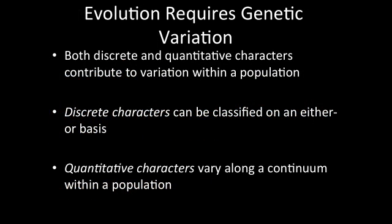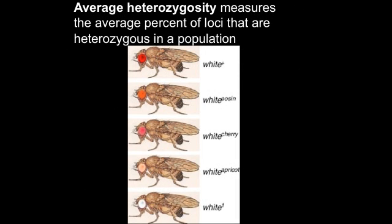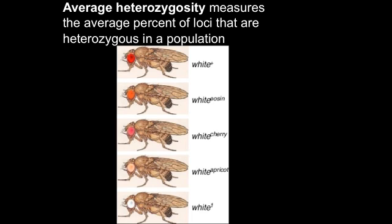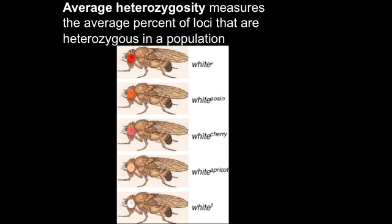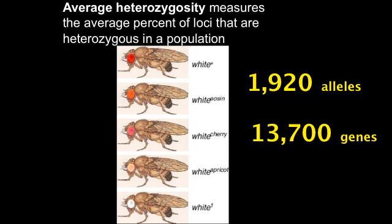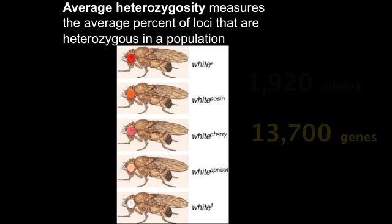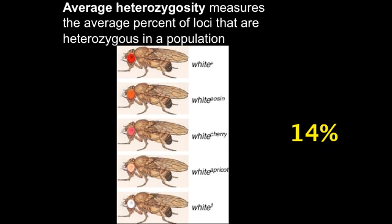A population must have gene variability in order to evolve. Discrete and quantitative measures can be measured in a population. One measure is the average heterozygosity — the average percentage of alleles existing in a population. It's called average heterozygosity because alleles are alternate forms of a gene, and the prefix hetero means different. For example, the wild fruit fly Drosophila melanogaster is heterozygous for 1,920 of its 13,700 gene loci, an average heterozygosity of 14%. In fact, a heterozygosity of just 1% is enough for natural selection to work on.